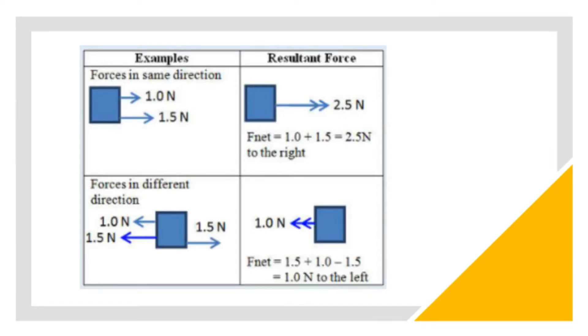For the second example, the forces 1 newton and 1.5 newton are both directed to the left, while 1.5 newton is directed to the right. The F net will be 1.5 plus 1 minus 1.5. We get 1 newton to the left.